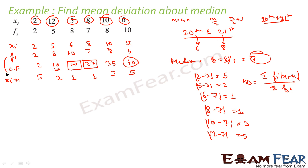So let's find fi into xi minus m mod. We will multiply these two values, this and this. So make it circle if you want. Multiply these two. So what we will get is fi into xi minus m mod.